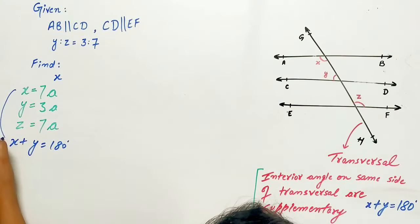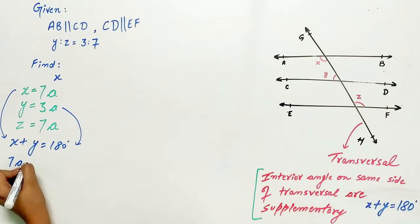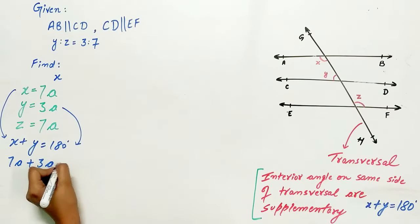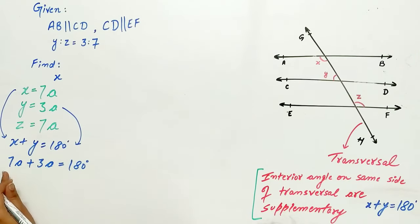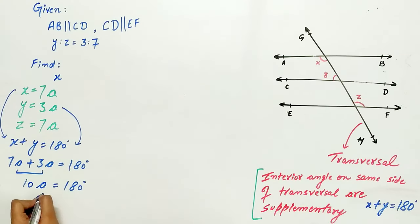X is 7A and Y is 3A. Substitute the values. 7A plus 3A is 180 degrees. 10A equals 180 degrees. And A is 180 divided by 10, which equals 18 degrees.